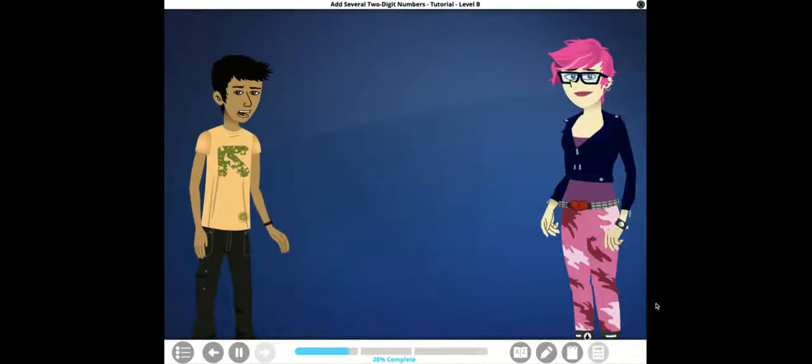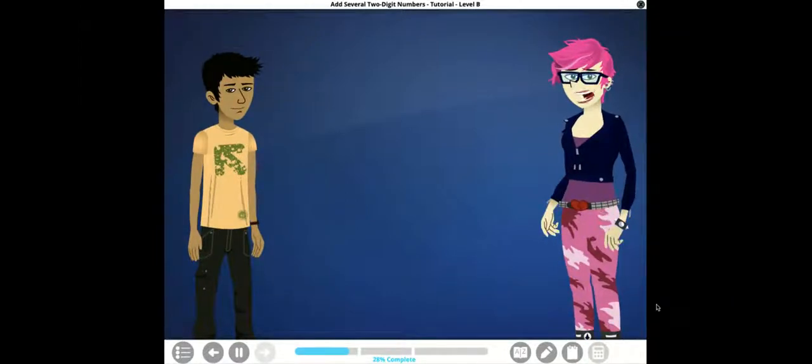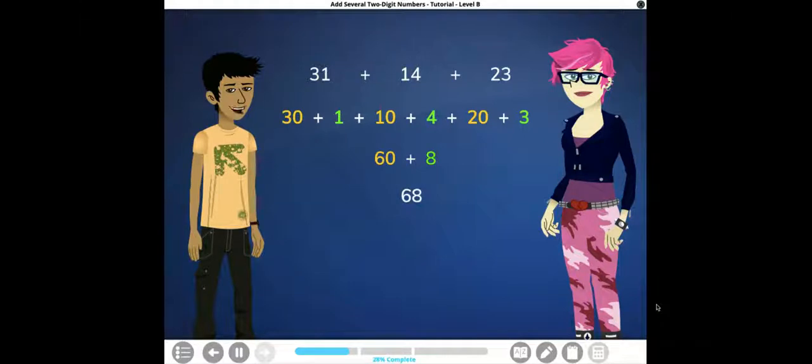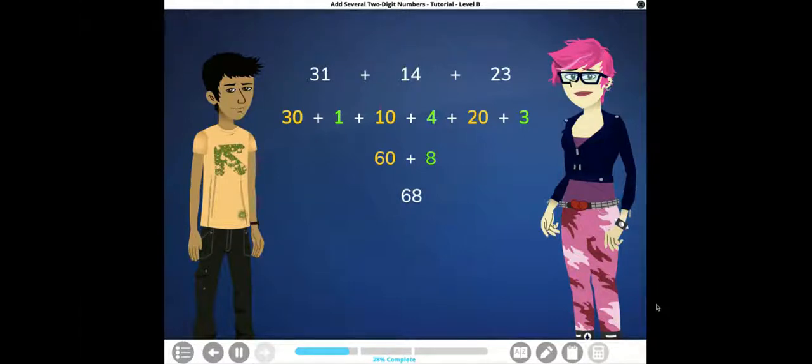Did you see what we just did? Yeah, we figured out how many stickers Jake has been collecting. Yep. But we did that by adding three two-digit numbers together. 31, 14, and 23. You're right. And all we had to do was break apart each number into tens and ones. That's called writing a number in expanded form. It makes it easier for us to add. First, we add the tens. 30 plus 10 plus 20 is 60. And then we add the ones. 1 plus 4 plus 3 is 8. Finally, we add the tens and the ones. 60 plus 8 is 68. We found 68 stickers.